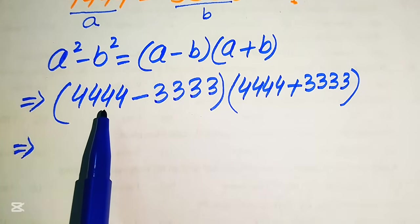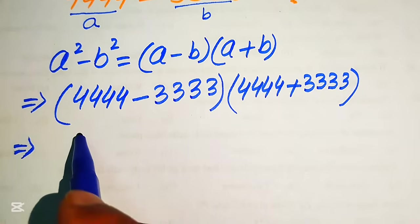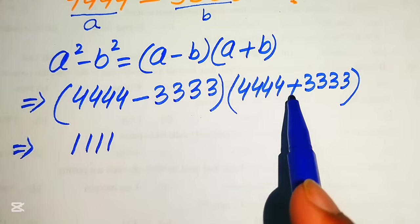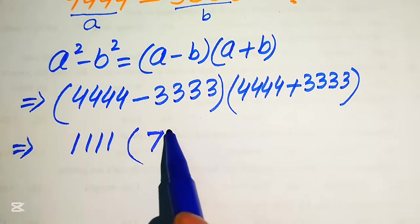Here when you subtract 4444 minus 3333 we get here 1111 into when you can add these two values we will get here 7777.